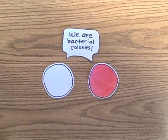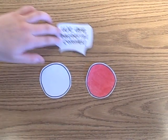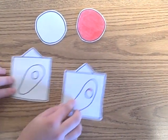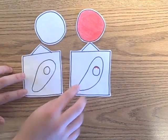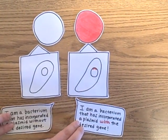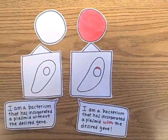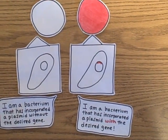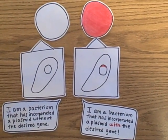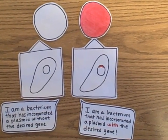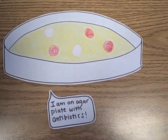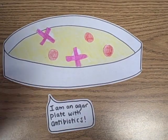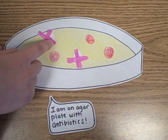However, the bacteria may have incorporated part of the plasmid without incorporating the desired gene. Sometimes, the bacteria with the desired gene will turn a different color from the bacteria without the desired gene. To ensure that the bacteria do contain the gene, we can check the bacterial colonies' color. Then we can isolate these bacterial colonies, which now consist of many bacteria, all potentially containing the desired gene.